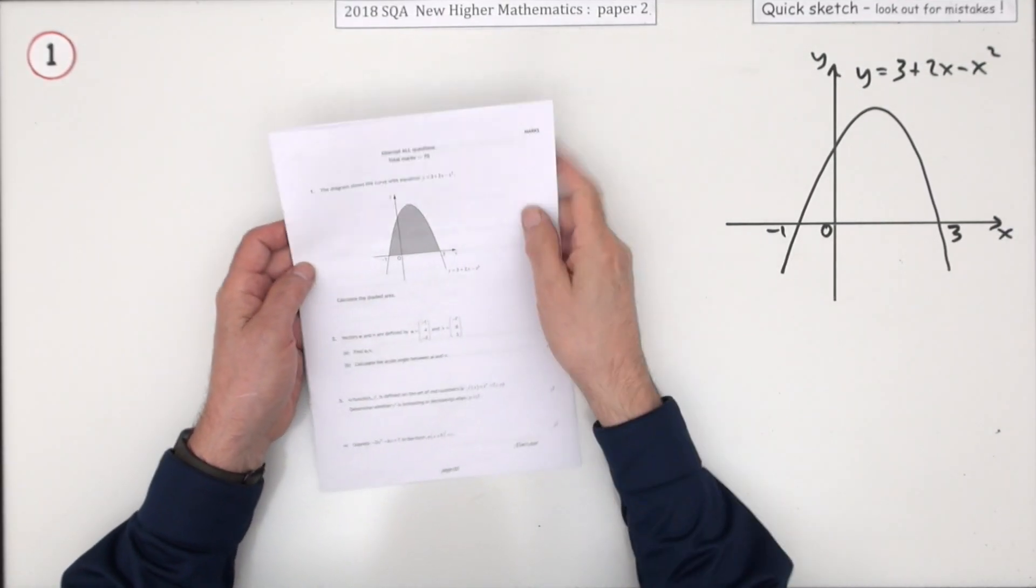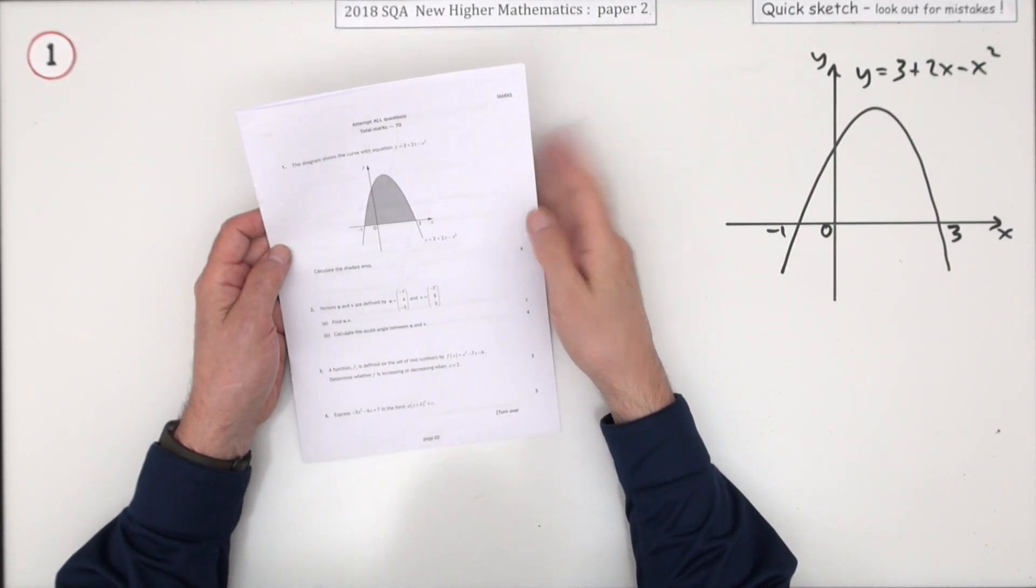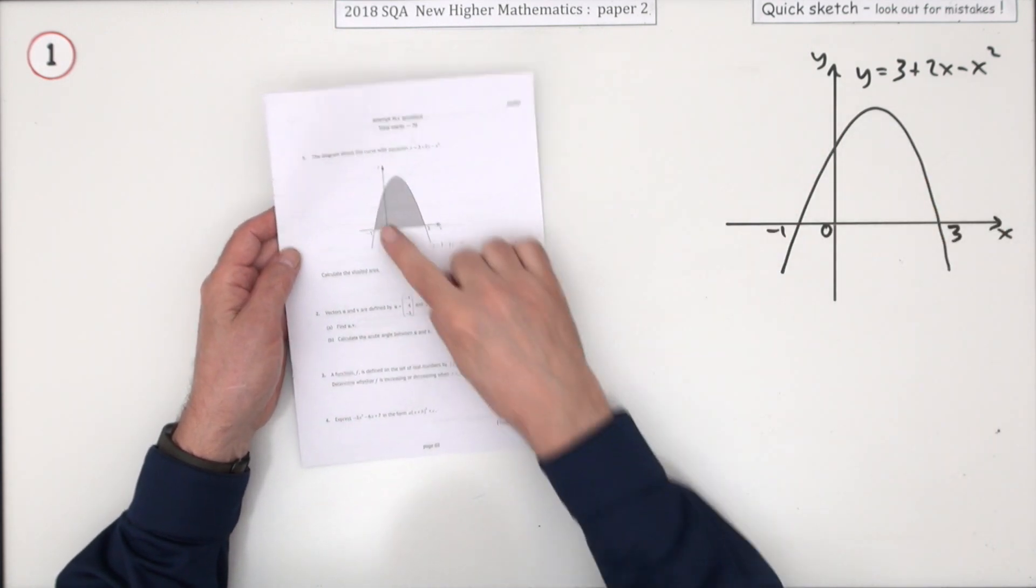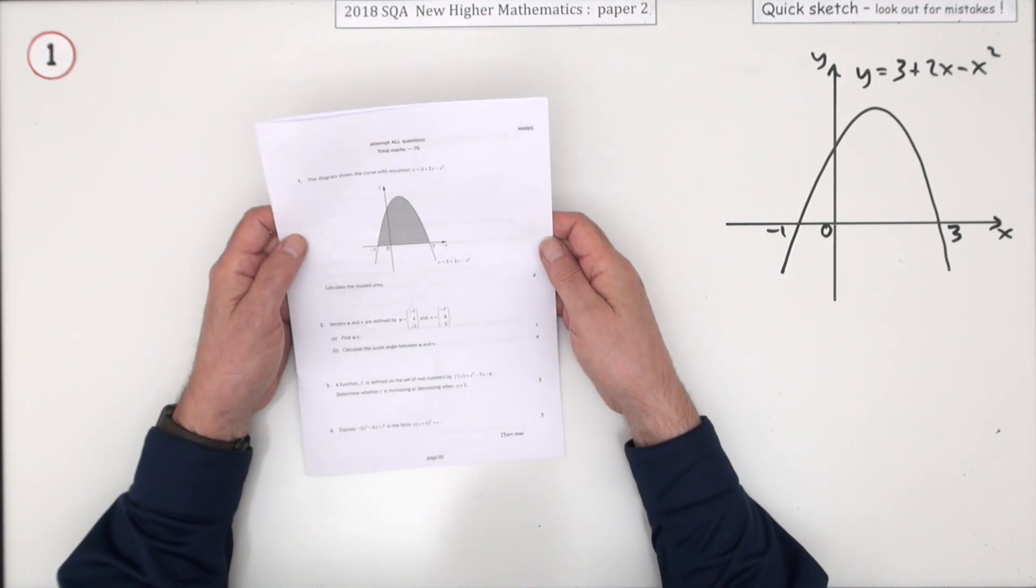The first question, number one, from paper two of the 2018 higher maths. Then we go area under a curve. What's this shaded area? I'm not shaded in but they've done it very nicely. Very friendly looking question here.